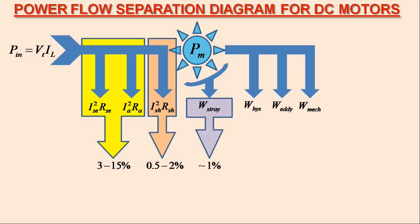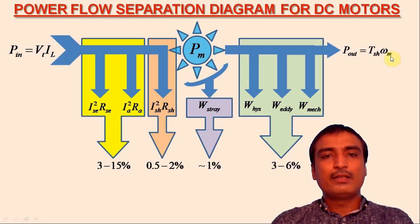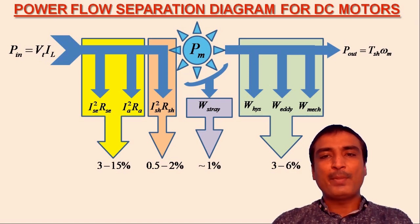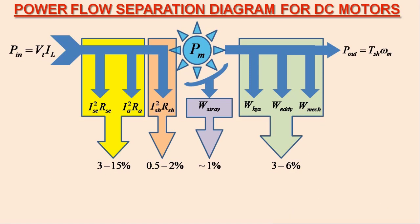After subtracting all these rotational losses from the mechanical power developed by the armature, one may finally have the net mechanical output power, which is equal to the product of torque T_SH at the motor shaft and mechanical speed omega_m of the rotor. The series field winding copper loss and armature circuit copper losses — including interpole winding copper loss, compensating winding copper loss and brush contact loss — together are called the variable losses in the DC motor.